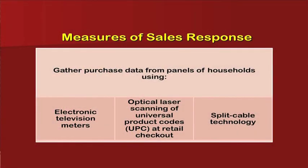The measures of sales response gather purchase data from a panel of households using electronic television meters, optical laser scanning product codes, and split-cable technology. Electronic television meters record what customers are viewing, universal product codes bought from the retail sector are scanned, and split-cable technology records what customers are buying and which commercials are being seen. This electronic recording of what is being viewed in households is a kind of TRP for the ad, working as a success measure in the market.